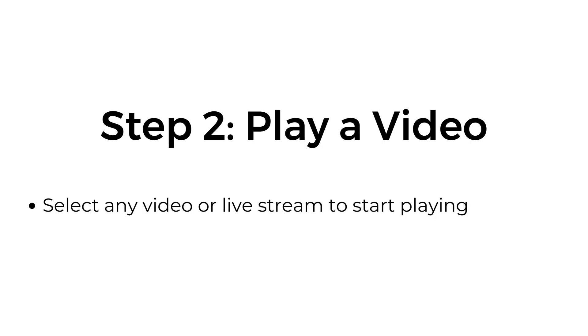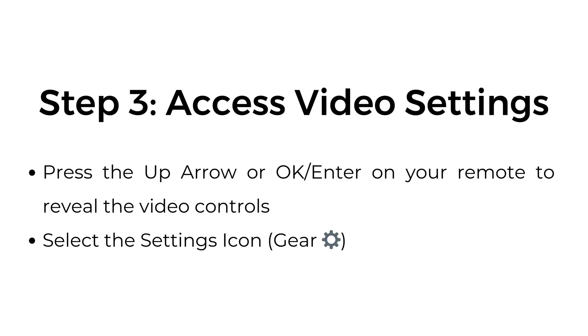Step two — play a video. Select any video or live stream to start playing. Step three — access video settings. Press the up arrow, OK, or enter on your remote to reveal the video controls, then select the settings icon.